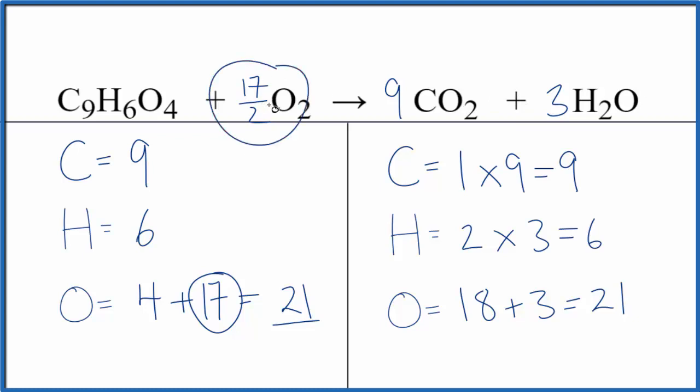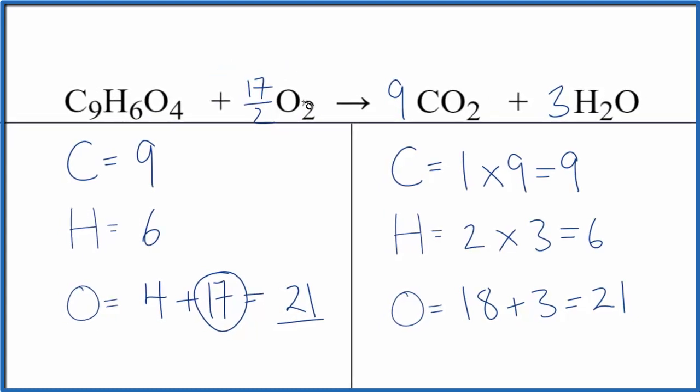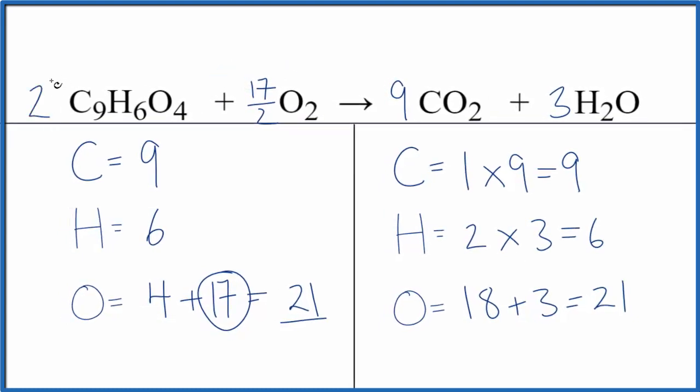Sometimes though, teachers don't like to have the fraction here, but that's pretty easy to fix. We just multiply everything by two. Two times one, two times 17 over two, two times nine, and two times three. And that gives us.